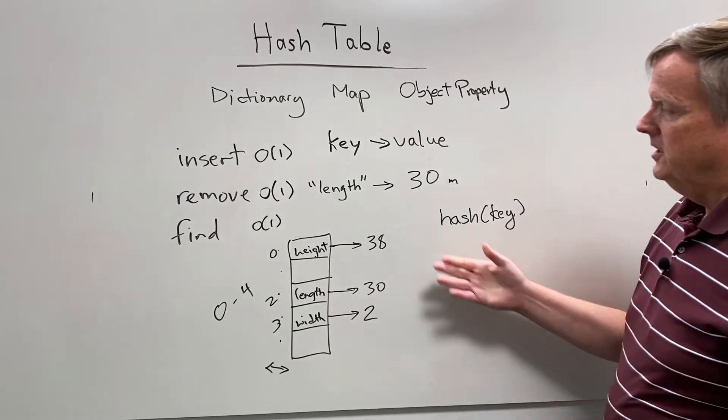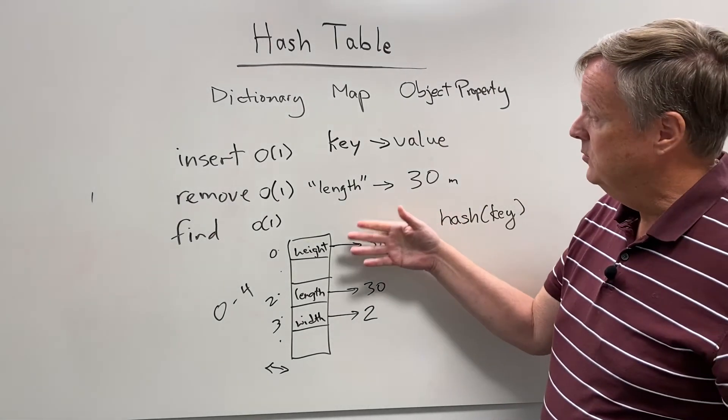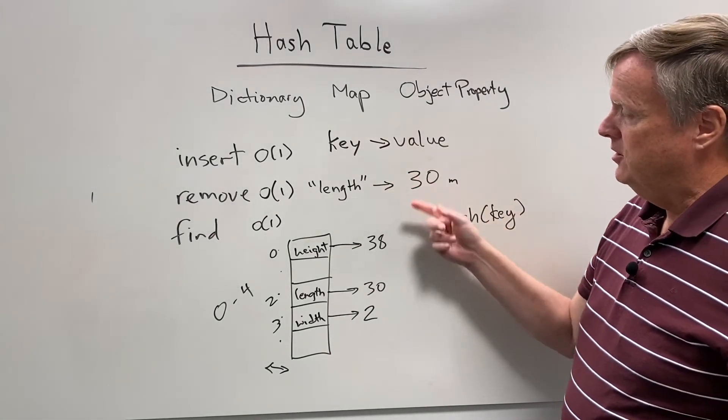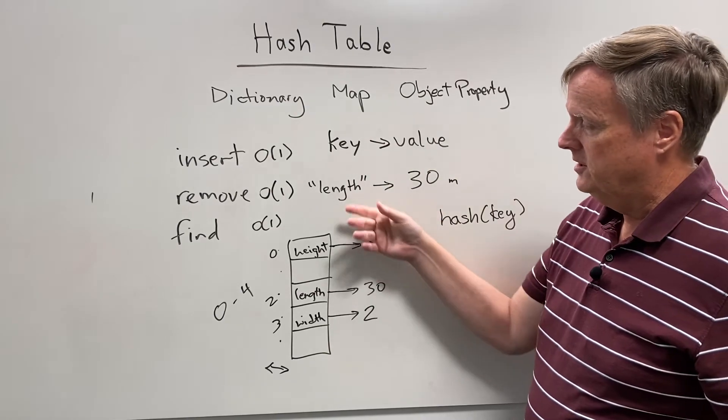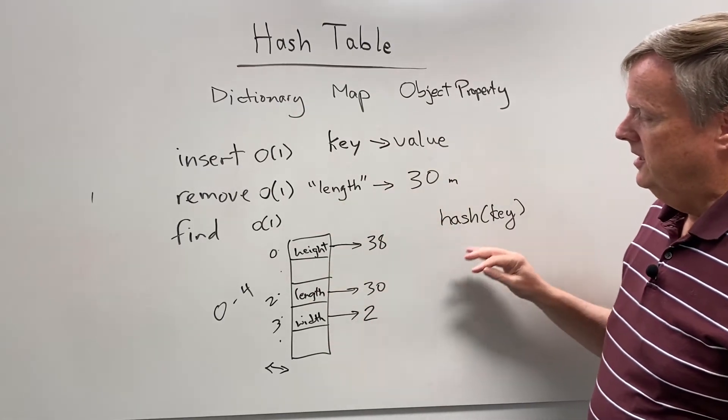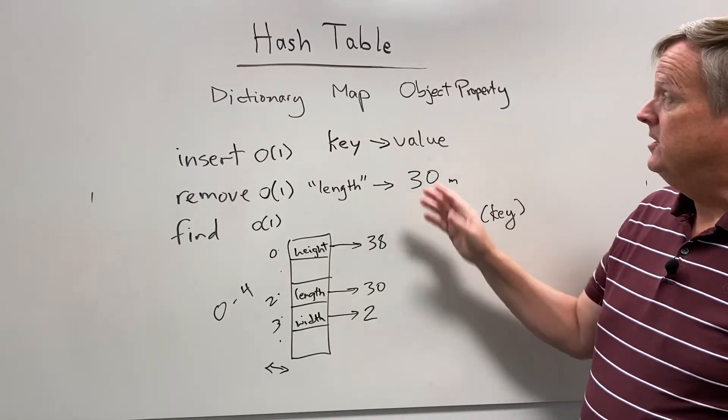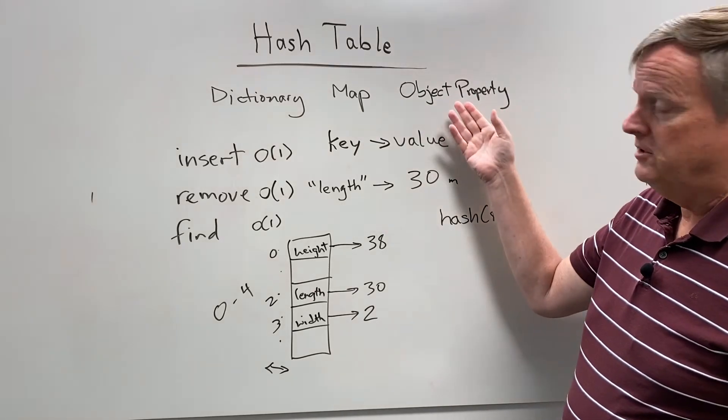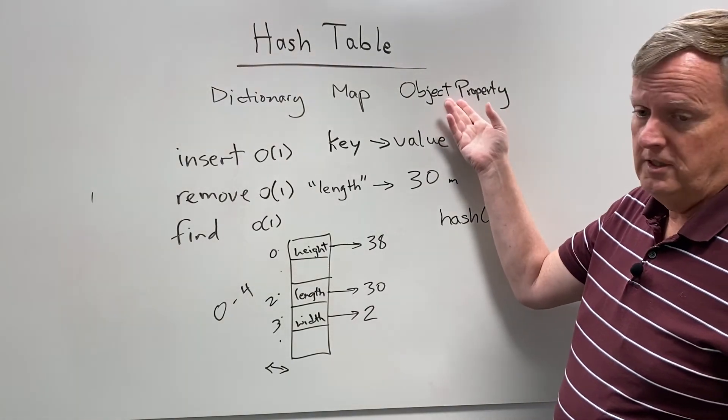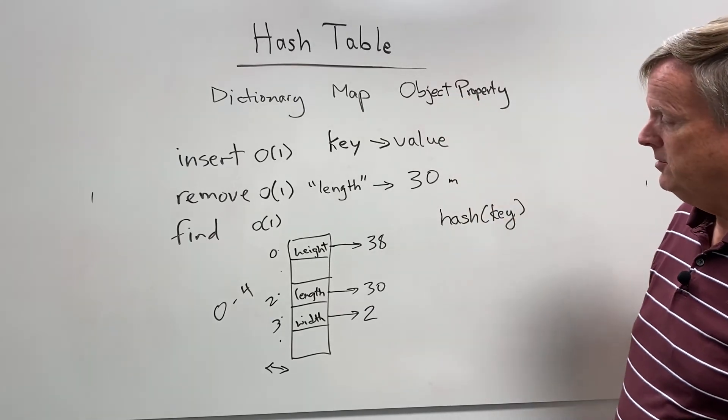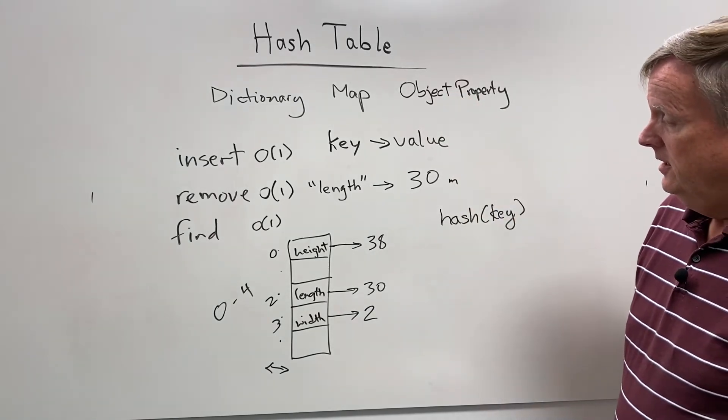So hash tables are really amazing for doing things with these key value pairs and doing them very quickly. They're very fast. And so they're used a lot in those types of things. That's why JavaScript and many languages use something equivalent to that for their object property lookups.